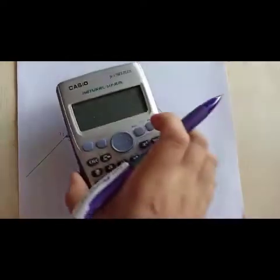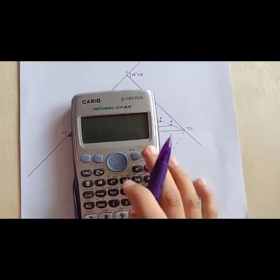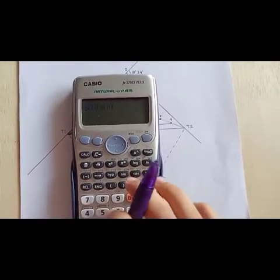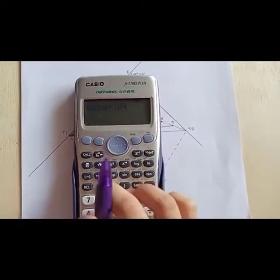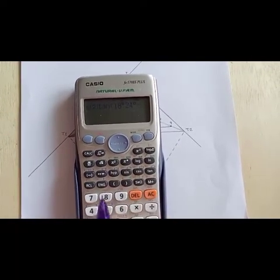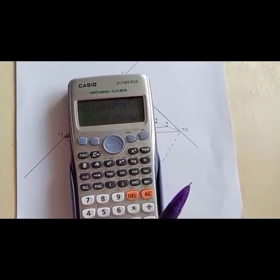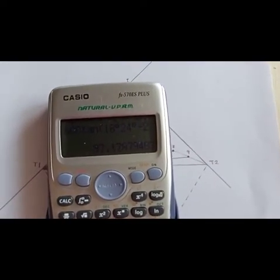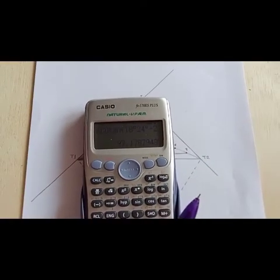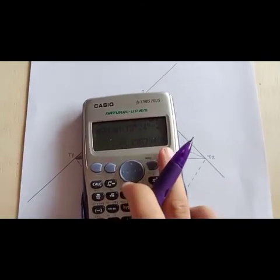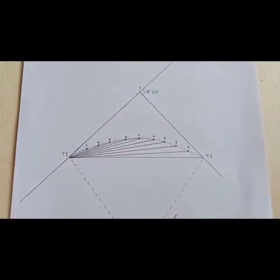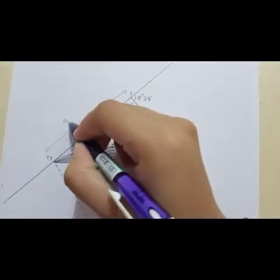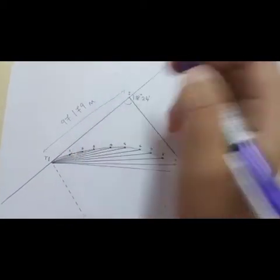Now, check out your calculator and put the information you have. The answer is 97.1787. Round into 97.179. So, the distance is 97.179 meter.